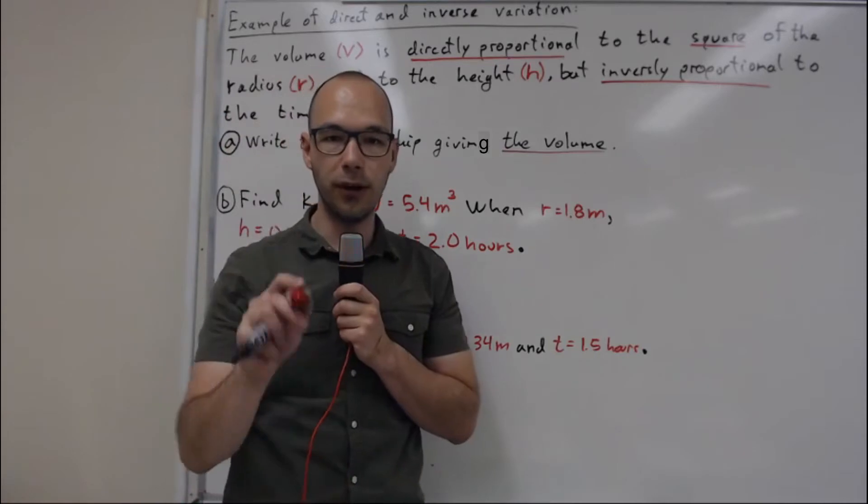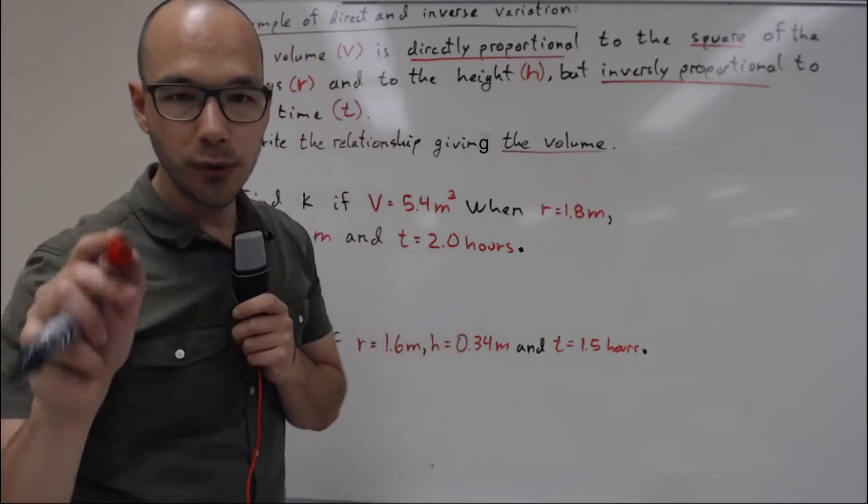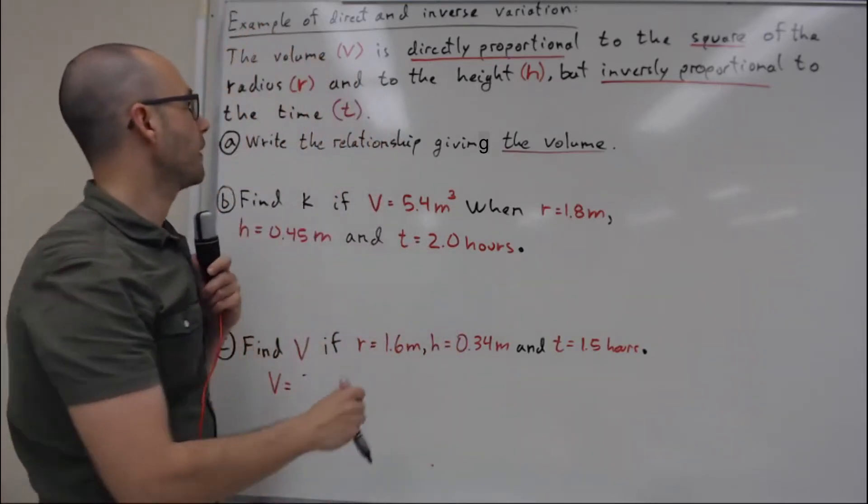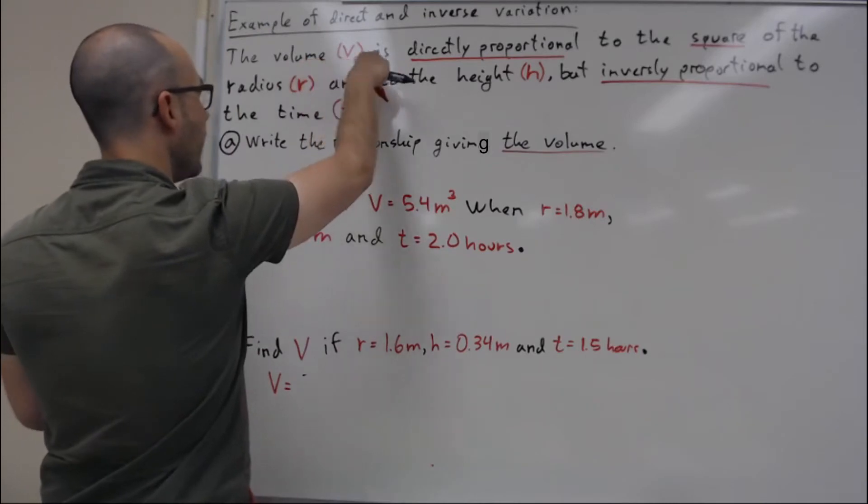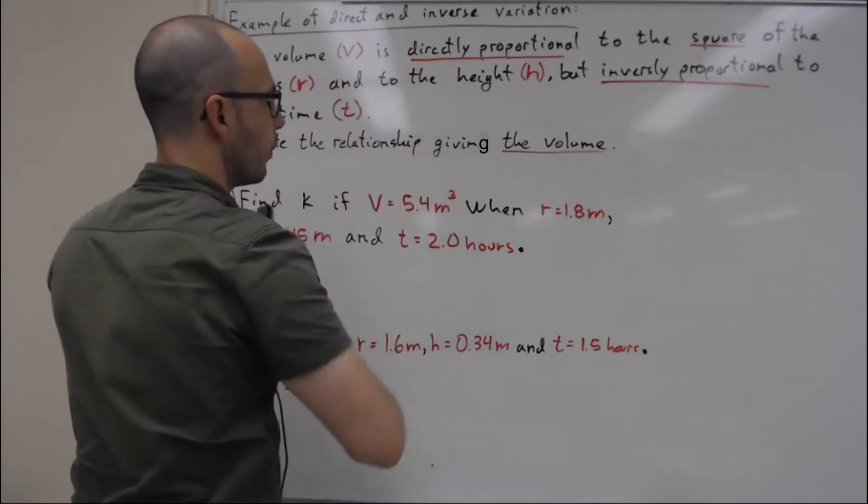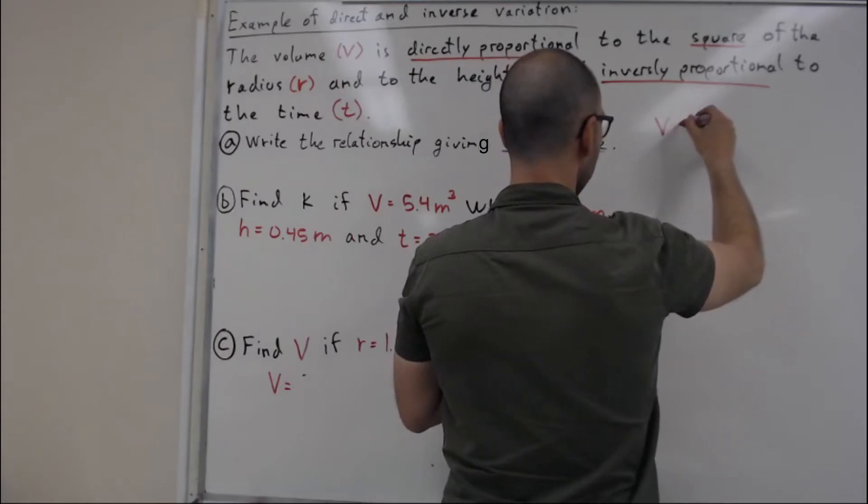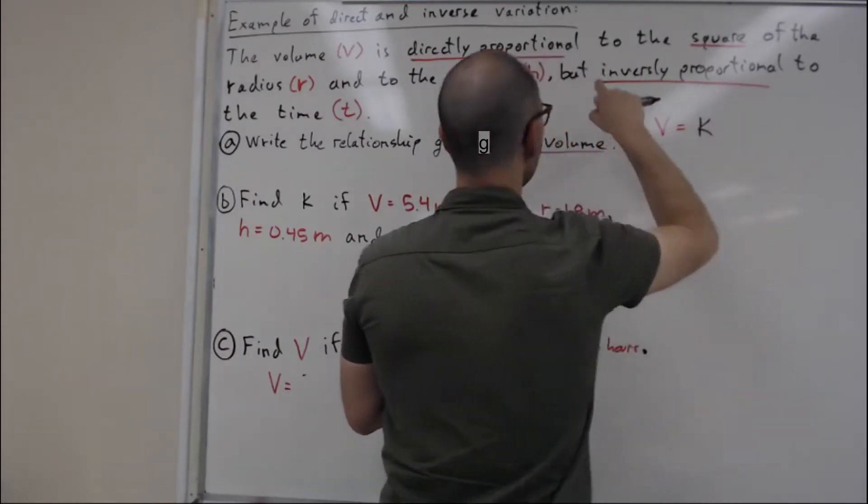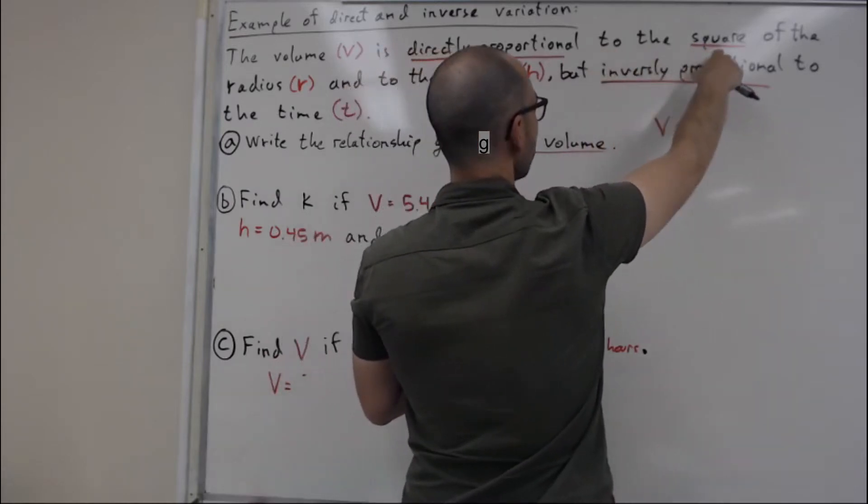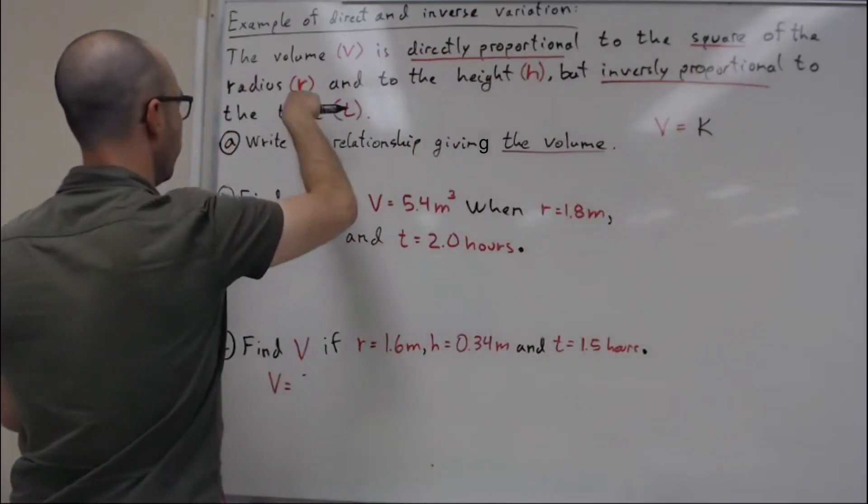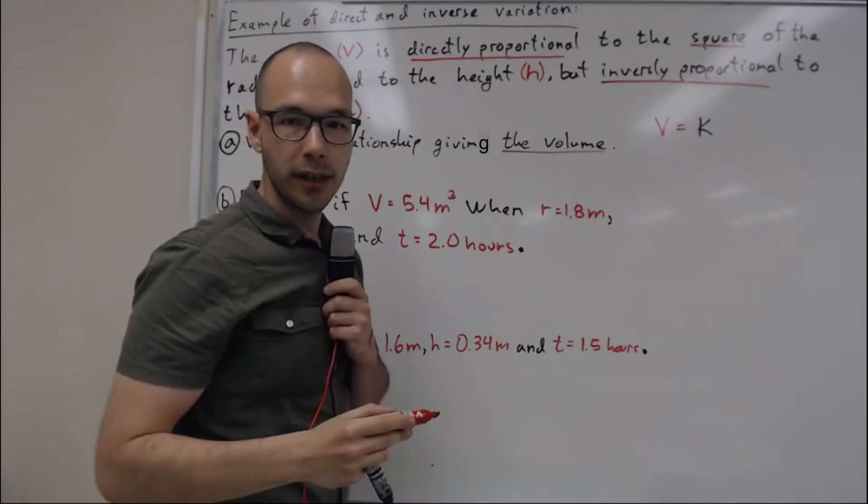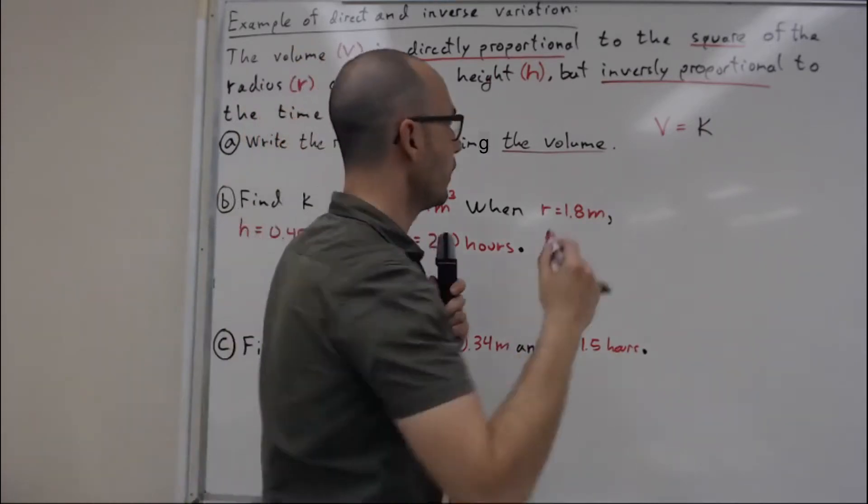First thing we have to do is write the relationship giving the volume. The volume V is directly proportional, which means that V is equal to k times the square of the radius, so directly proportional to the square of the radius and to the height h, so multiplied also by h.